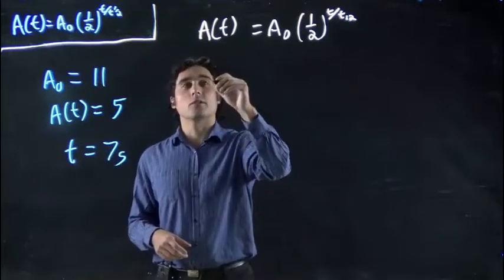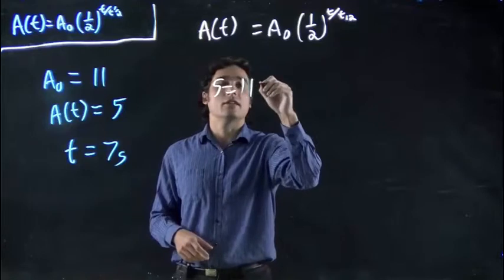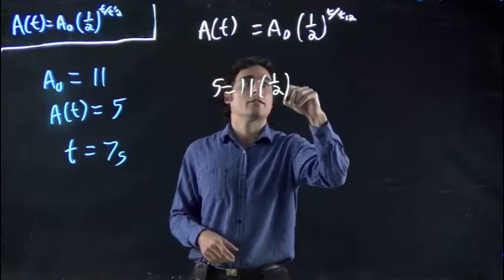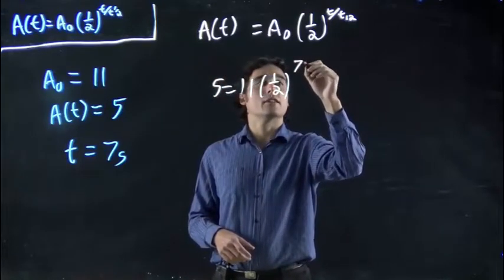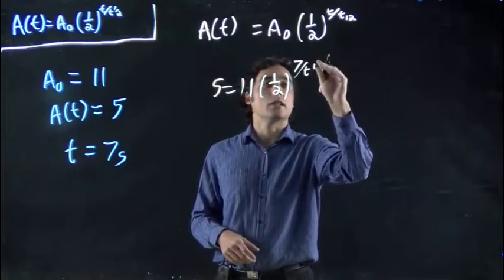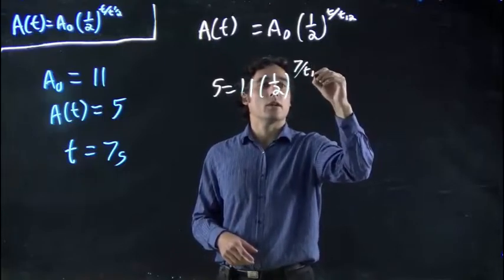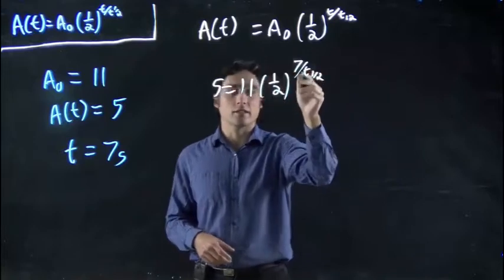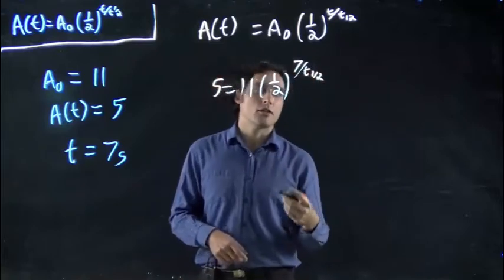So rather than this general formula, we're going to have 5 equals 11 times 1/2. And this is 7 divided by t₁/₂. And we want to solve this for this term right here, the t₁/₂.